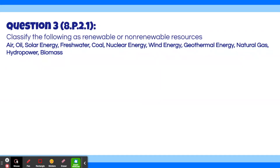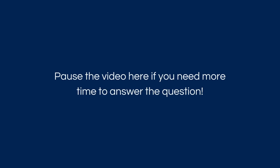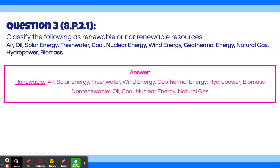Question 3. Classify the following as renewable or non-renewable resources: air, oil, solar energy, fresh water, coal, nuclear energy, wind energy, geothermal energy, hydropower, and biomass. The renewable resources are air, solar energy, fresh water, wind energy, geothermal energy, hydropower, and biomass. The non-renewable ones are oil, coal, nuclear energy, and natural gas. If you got that right, go ahead and skip to the timestamp of the next question. Otherwise, let's go through each of these resources and see why it's renewable or non-renewable.